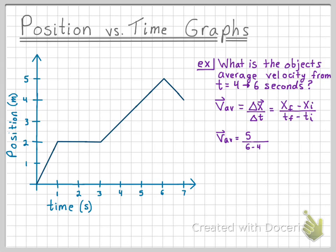At time equals 6, we see that the object has a position of 5. And at time equals 4, we see that it has a position of 3. Doing this math, we find that the average velocity is equal to 1 meter per second.